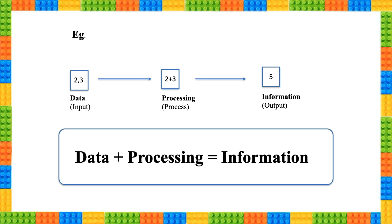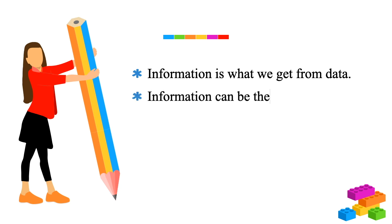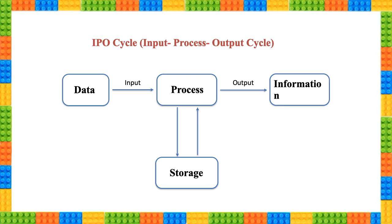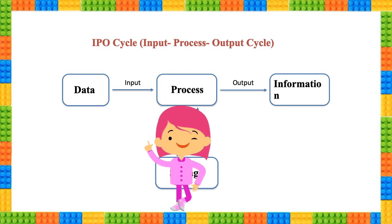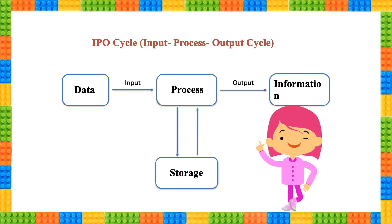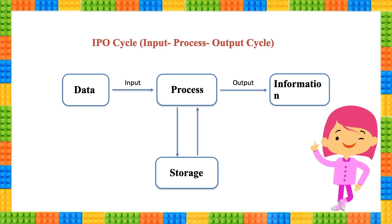Hence we conclude that information is what we get from data. Information can be the result of processing data. As we have seen in the previous example, after the processing of data we got the information. Now that we have learned about data, process, and information, we will quickly have a glance at IPO, that is input-process-output cycle.